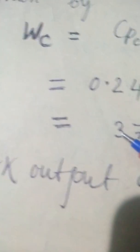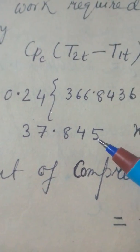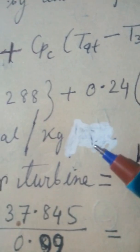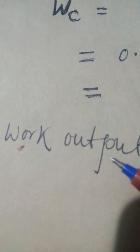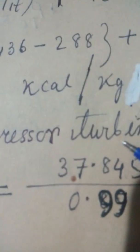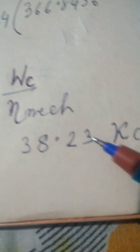Now this will be 37.845 kilocalorie per kg. Now here the work output in the coupled system, work output of compressor turbine. This is in the set, compressor turbine set. This is the work of the compressor divided by the mechanical efficiency between compressor and turbine. This is given 0.99, 99%, so this will be slightly more, the turbine.